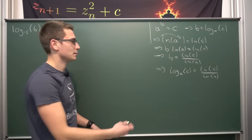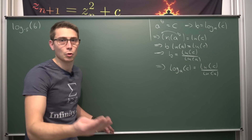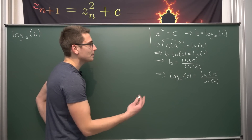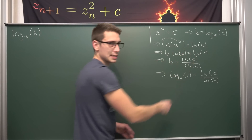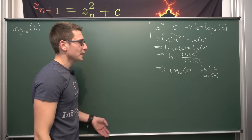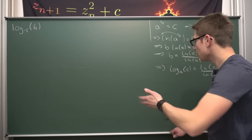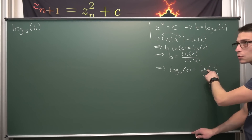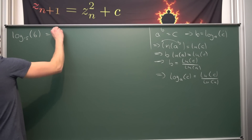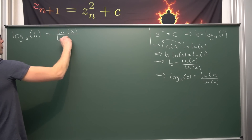We can express it using each and every kind of logarithm here, even logarithm base pi, though you're probably never going to use that. But for our purposes we can apply the ln. By using this property we can rewrite our log base negative 5 of 6 as the natural log of 6 divided by the natural log of negative 5.